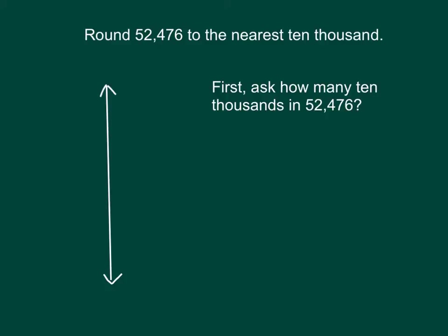First, since we're rounding to the nearest 10,000's place, we ask, how many 10,000's are in 52,476? And in this case, there are five 10,000's there.